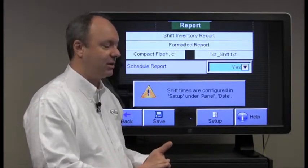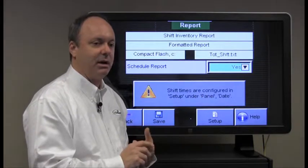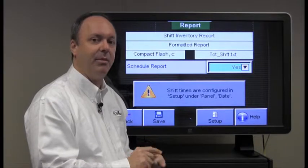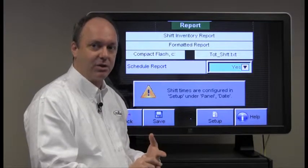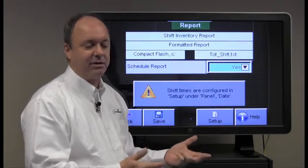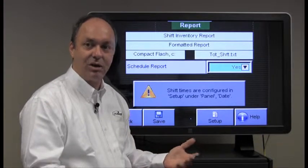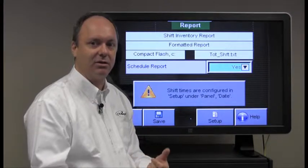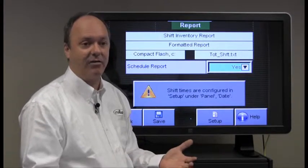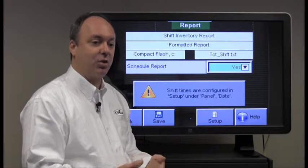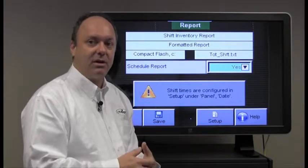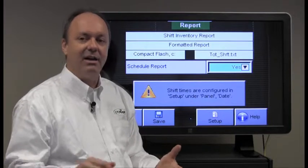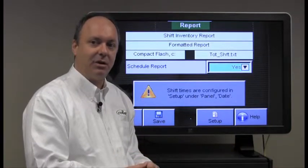So in that particular menu, you set up the shift begin time and then the duration of that particular shift. So if you have, for instance, three eight-hour shifts, then you would give it the start time for each shift and tell it that the duration is eight hours. You may have a factory where you have a shorter shift that's a third shift or a shift that overlaps into an additional day. So that's why we allow up to three different shift times to be defined.